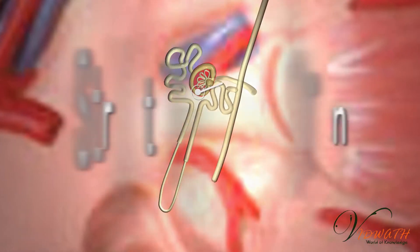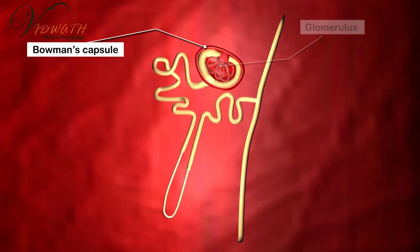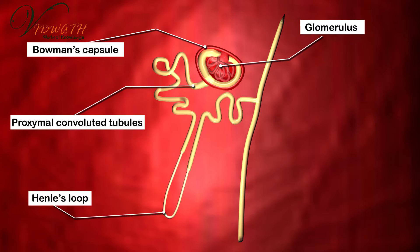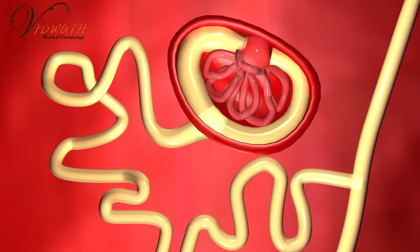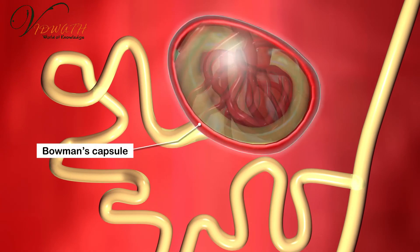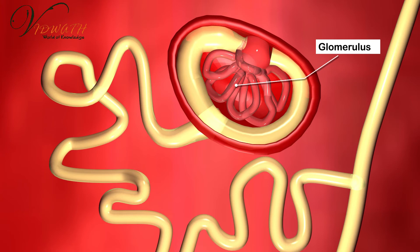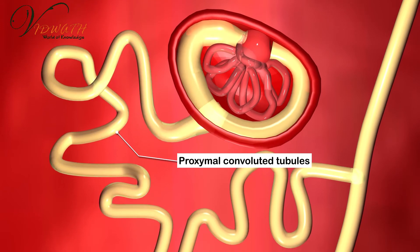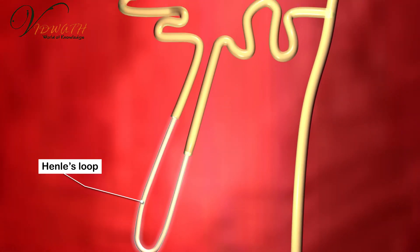Structure of a nephron: A nephron consists of the following parts — glomerulus, Bowman's capsule, proximal convoluted tubules, Henley's loop, distal convoluted tubules, and collecting duct. The nephron has a cup-shaped structure called the Bowman's capsule. The thin-walled blood capillaries present inside the Bowman's capsule are called the glomerulus. The tube-like structures after the Bowman's capsule are called proximal convoluted tubules. A hairpin or U-shaped structure that helps absorb ions is called Henley's loop.